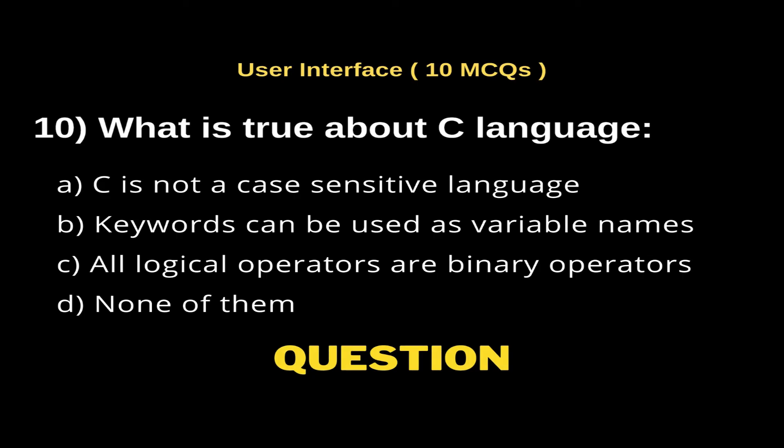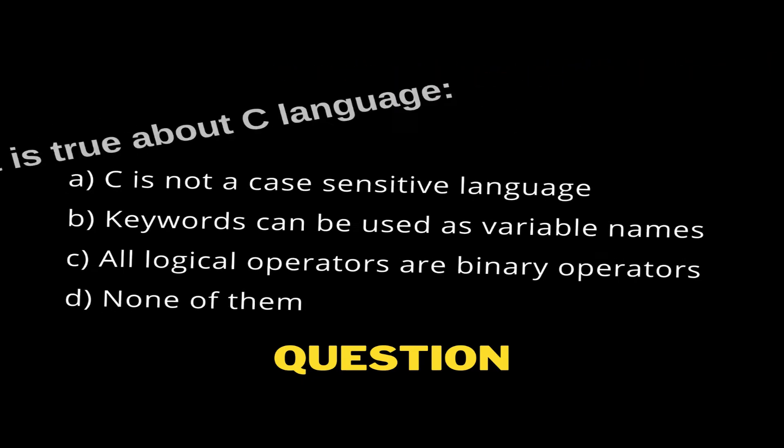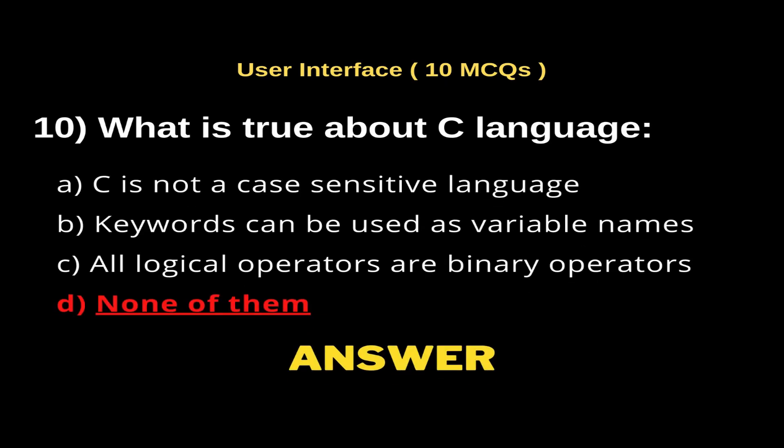Question 10: What is true about C language? Options: a) C is not a case sensitive language, b) keywords can be used as variable names, c) all logical operators are binary operators, d) none of them. The right answer is option d, none of them.